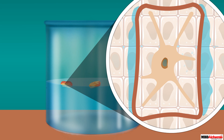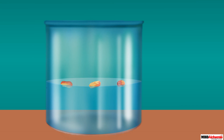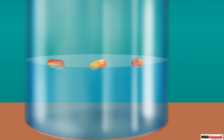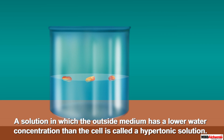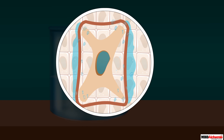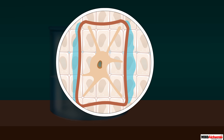Such shrinking of the cytoplasm of a cell away from the cell wall is called plasmolysis. Plasmolysis occurs when a cell is kept in a solution with a lower concentration of water. The plasmolysis of cells results in the overall shrinking of the raisins. Any solution in which the outside medium has a lower water concentration than the cell is called a hypertonic solution. In such a solution, water moves outside the cell by osmosis.